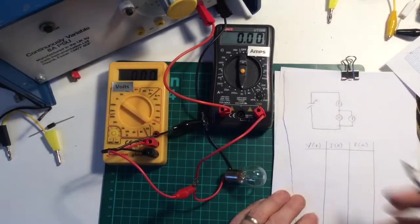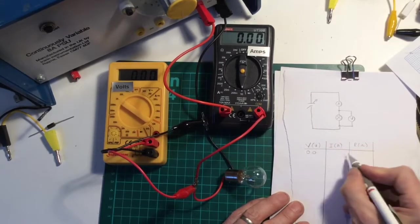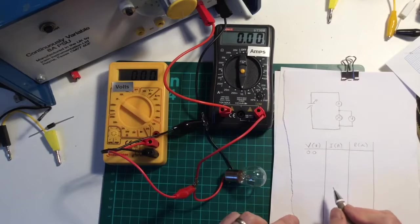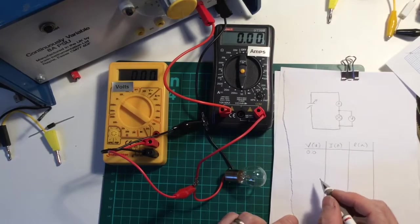So I'm going to do the same thing again. I'm going to start with the voltage at zero and I'm going to measure the current and I think I'll record up to six volts again the same as last time just because I know it should fit on the graph.